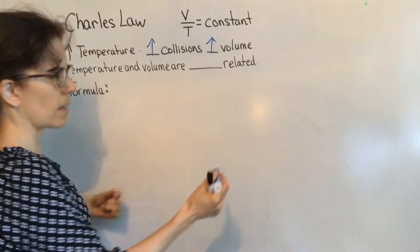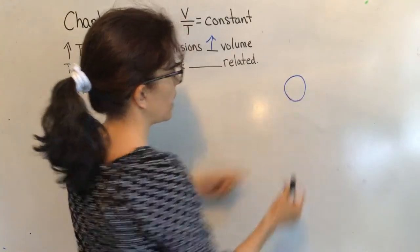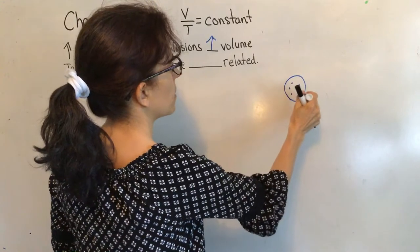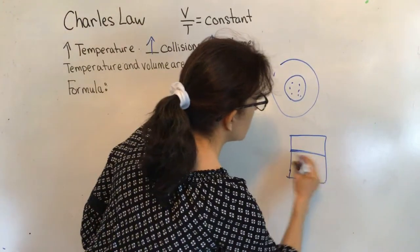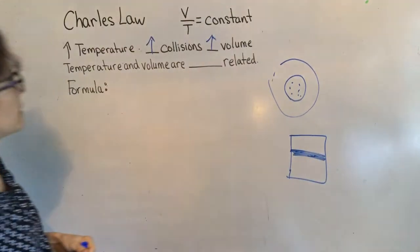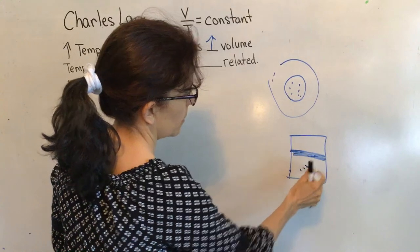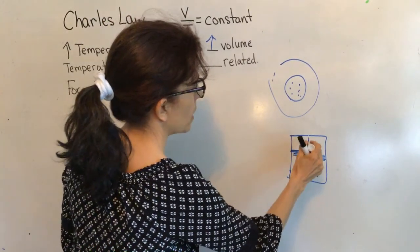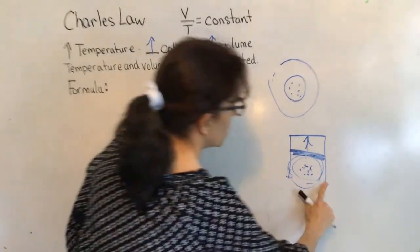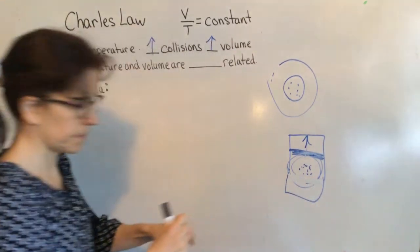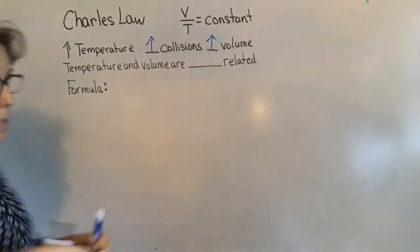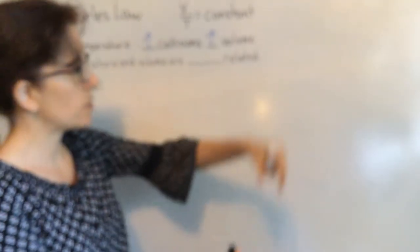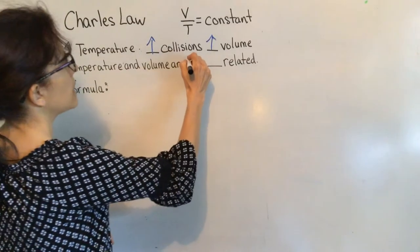Think about how you can increase the volume — think of a balloon that has particles stuck in it and the balloon begins to expand. Think of a piston and a cylinder: you increase the temperature, maybe put a little spark there, and the piston goes up, making the volume inside the cylinder bigger. So temperature and volume are directly related.